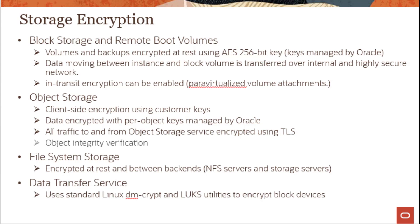File Storage Service also provides encryption at rest and between backends, where backends are NFS servers and storage servers. Snapshots are available for File System Storage Service as well. For data transfer services, Oracle uses standard Linux DM crypt and LUKS utilities to encrypt all block devices, providing very strong encryption policies and utilities for all different types of storage services available in Oracle Cloud Infrastructure.